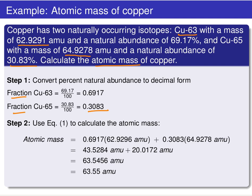Once we have the two fractional abundances, we use equation one — taking the mass of each isotope and multiplying by its fractional abundance for both isotopes, summing them up — and we end up with an atomic mass of 63.55 AMU. I encourage you to check this with the periodic table.